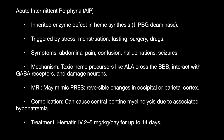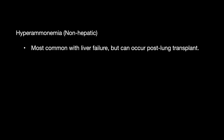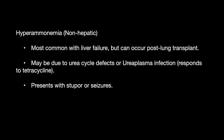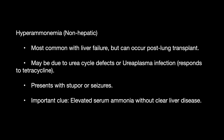Treatment for acute intermittent porphyria is hematin IV, 2 to 5 mg per kg per day for up to 14 days. Non-hepatic hyperammonemia can be seen post-lung transplant, possibly due to urea cycle defects or Ureaplasma infection. It presents with stupor and seizures, and an important clue is elevated ammonia without clear liver disease.